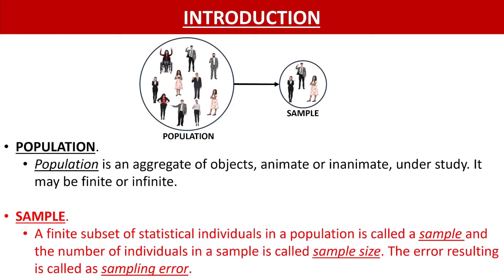In statistics, what we do is we study the characteristics of a group of objects. That brings us to the definition of population. Population is an aggregate of objects, animate or inanimate, under study. It may be finite or infinite. Whatever group of objects whose characteristics you are studying, they are called the population.